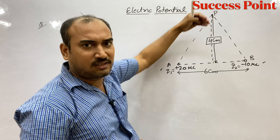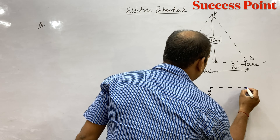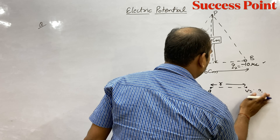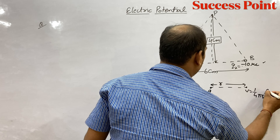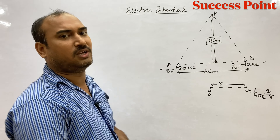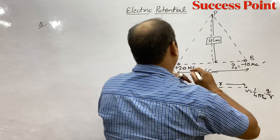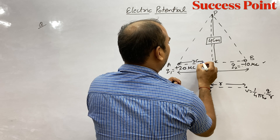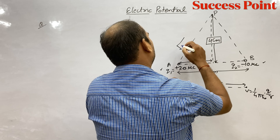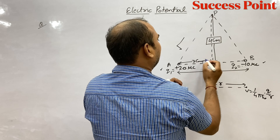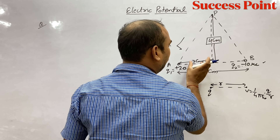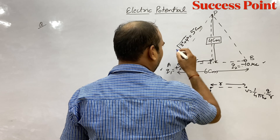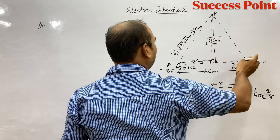V = KQ/R formula lagayenge. R1 ki distance nikalni padegi. Half of 6 cm = 3 cm base, perpendicular = 4 cm. By Pythagoras: R = root of (3² + 4²) = root of 25 = 5 cm. So R1 = R2 = 5 cm = 0.05 meter. Both charges are equidistant from P.